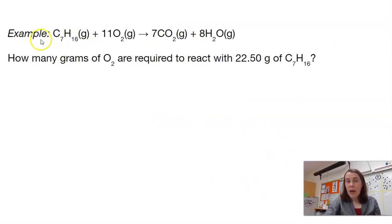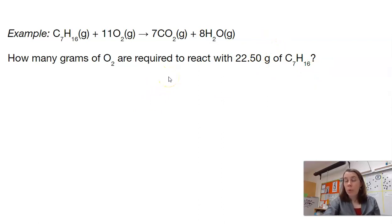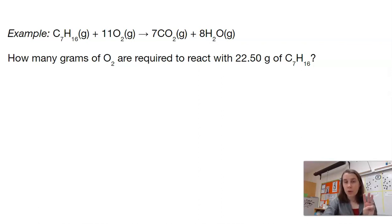Here is another example. We have a balanced equation: how many grams of O₂ are required to react with 22.5 grams of C₇H₁₆, which is heptane? Pause here and see if you can get the two molar masses you need, and the mole-mole ratio. This will have three conversion factor steps to get from grams of one thing to grams of another. Go ahead and pause, then I'll go over it.